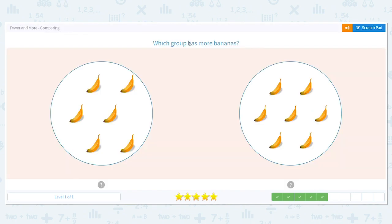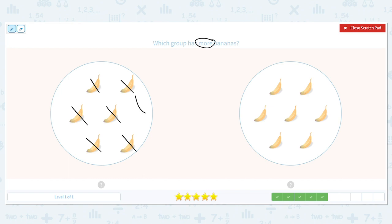Next, which group has more bananas? Uh-oh. I don't see fewer. I see more. So we don't want the lower number. We want the higher number this time. So which group has more bananas? They look kind of close and this is one of those times where it's important to count and check. All right, count with me. One, two, three, four, five, six. Six in this group.